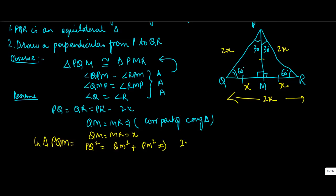PQ is equal to 2X. QM is X plus PM squared. Or PM squared is equal to 2X whole squared, this is 4X squared minus X squared, which equals 3X squared.